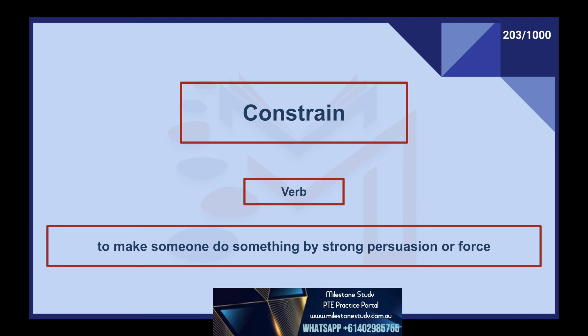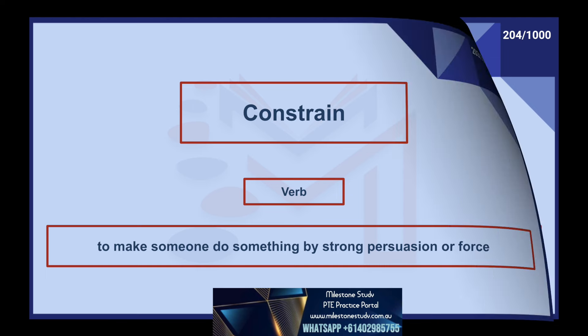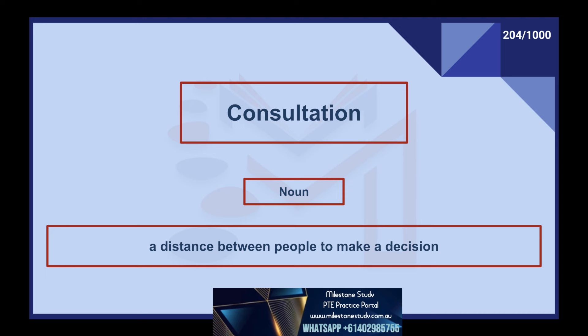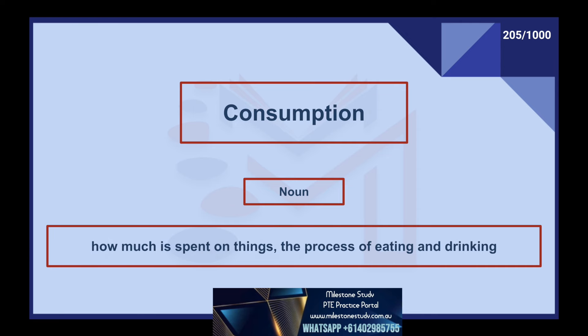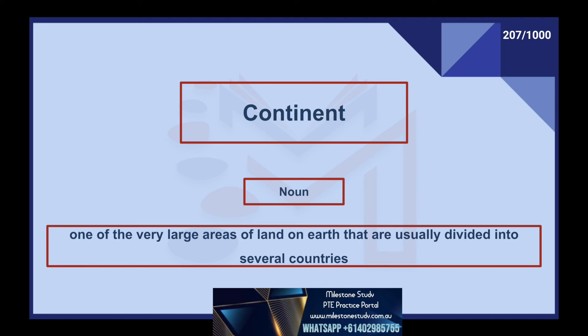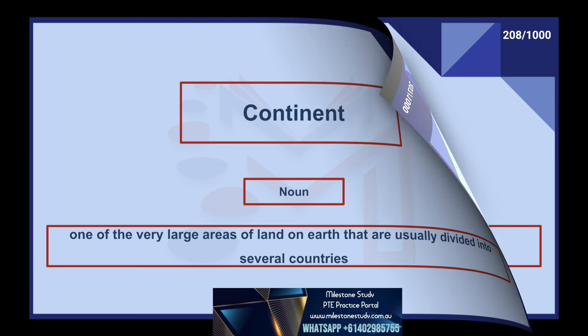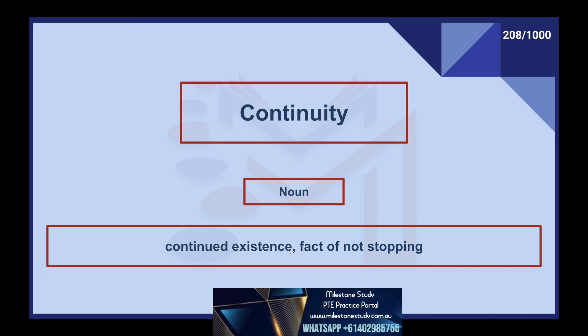Constrain, verb: to make someone do something by strong persuasion or force. Consultation, noun: a discussion between people to make a decision. Consumption, noun: how much is spent on things, the process of eating and drinking. Container, noun: an object that can be used to hold things. Continent, noun: one of the very large areas of land on earth that are usually divided into several countries. Continuity, noun: continued existence, fact of not stopping.